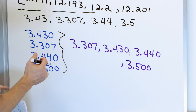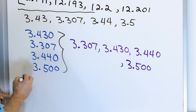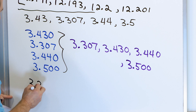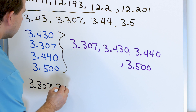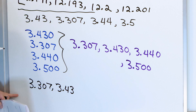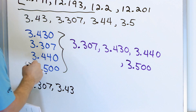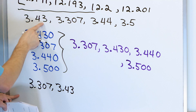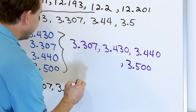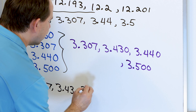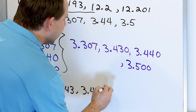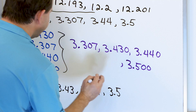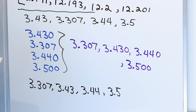The final step is to write them down in terms of the original problem: 3.307, then 3.43 — we added the zero, so we take it away. Then 3.44 — we added the zero, so we take it away. And then 3.5. Double-checking: 3.307, 3.43, 3.44, 3.5.